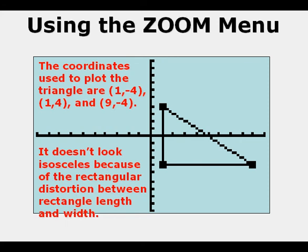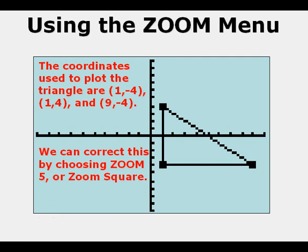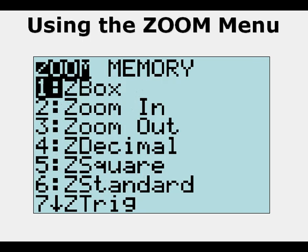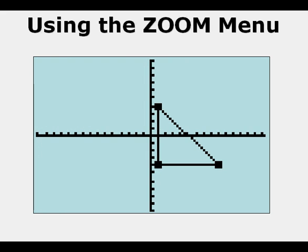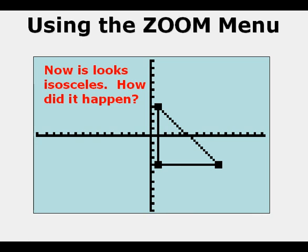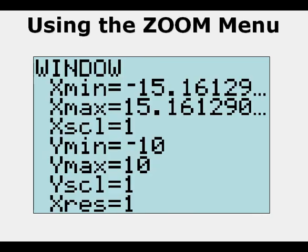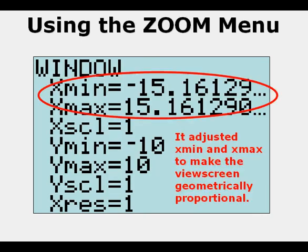And to adjust for that, we choose zoom 5 or zoom square. And we go to zoom, then 5. And what it does is it adjusts it for us. And how does this happen? Well, if we go to our window view, we see that it kept y min at negative 10 and y max at positive 10, but adjusted the x min and x max values to make the view screen geometrically proportional. And so that's how it does it.